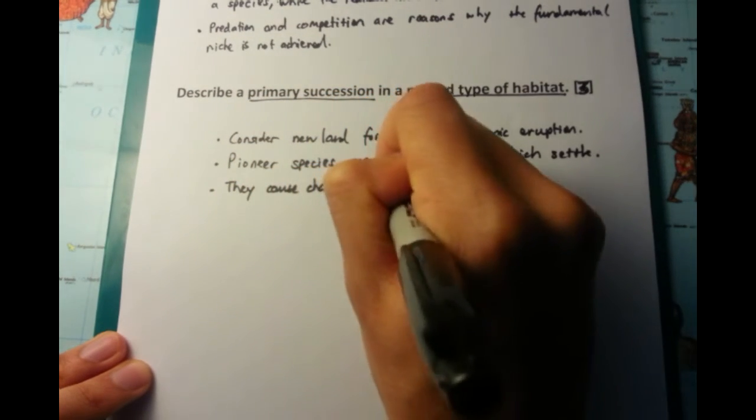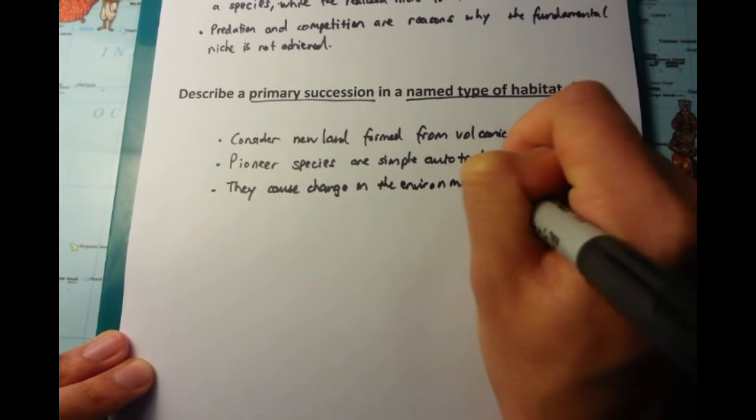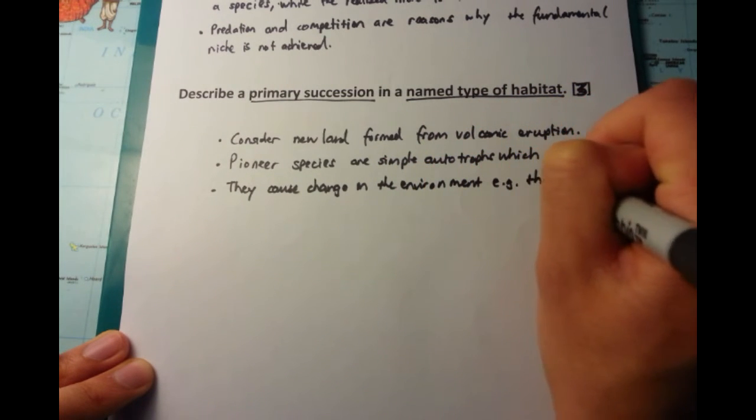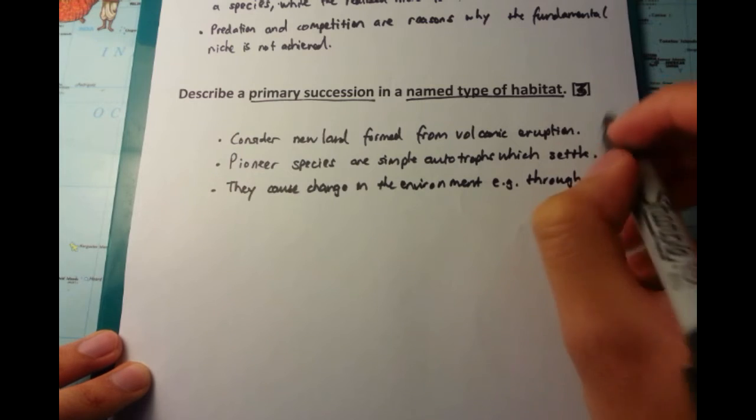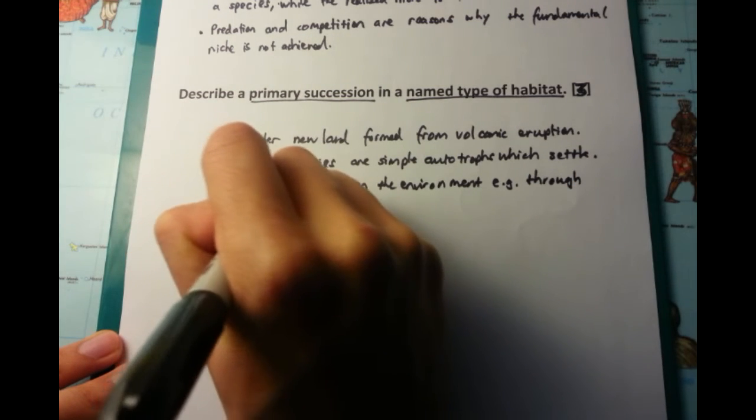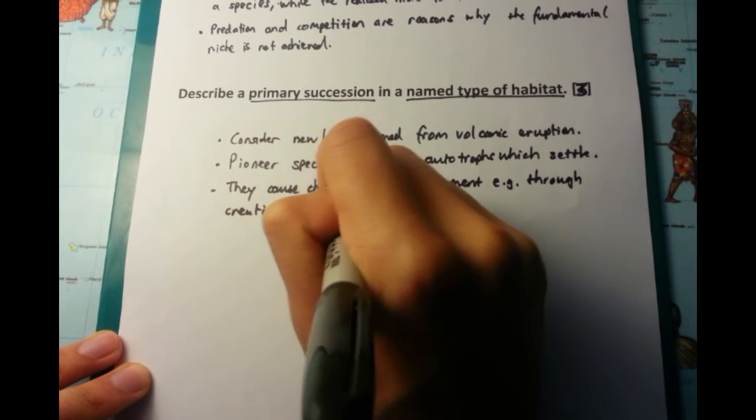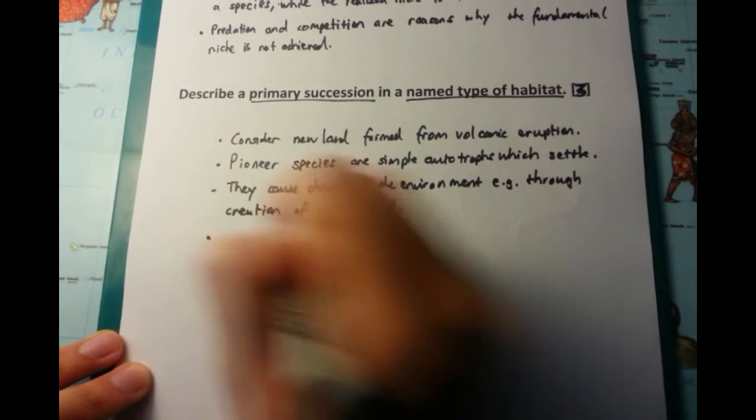This then causes a change in the environment. This could be through creation of organic soil, so breakdown of the substrate so that it is more suitable for future organisms to grow.